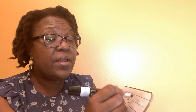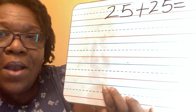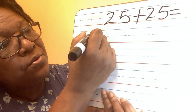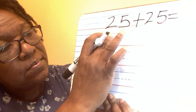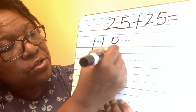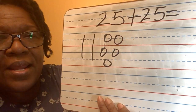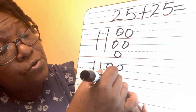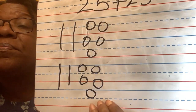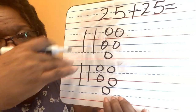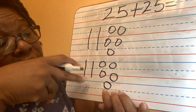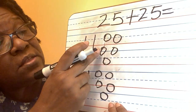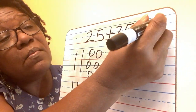Let's do one more: 25 plus 25. I'm gonna show you how I do it. So I do 10, 20, 21, 22, 23, 24, 25. And then I do the second 25 on the bottom — I'll tell you why in a minute — 10, 20, 21, 22, 23, 24, 25. It's easy to count because the tens are together and the ones are together: 10, 20, 30, 40, 41, 42, 43, 44, 45, 46, 47, 48, 49, 50.